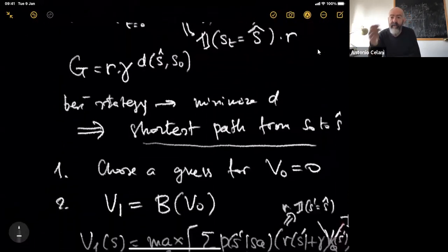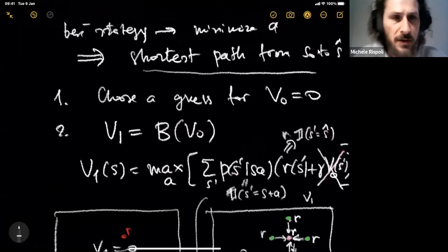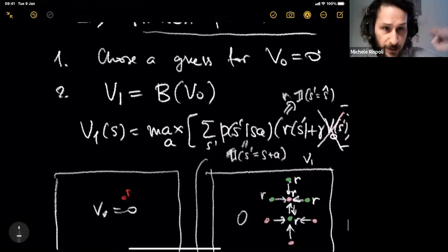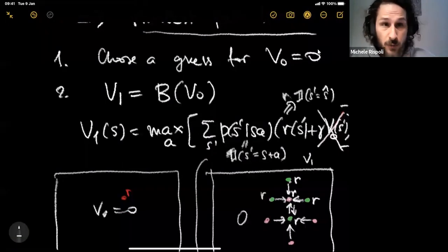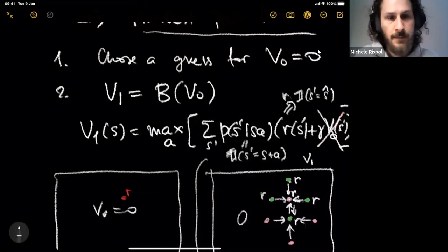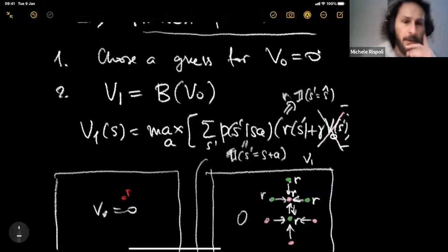Clarification: in the first step, V₁ equals R on the adjacent tiles of ŝ and zero elsewhere, including ŝ itself — because there's no 'stay in place' action. If we had included a stay action, we would update ŝ itself as well.